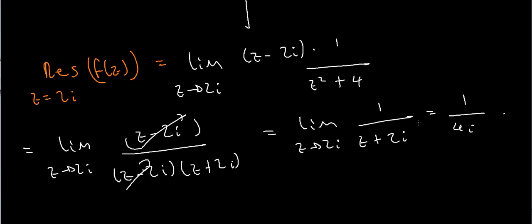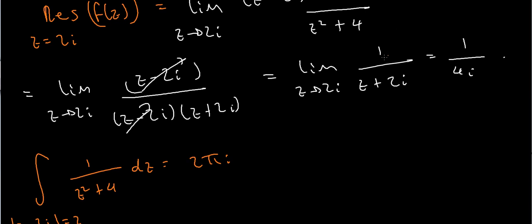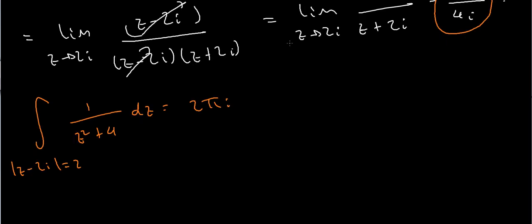Now, if I use the residue theorem, so using the residue theorem, this says that the integral over the circle, mod z minus 2i equals 2, of 1 over z squared plus 4 dz, that's just 2 pi i times the sum of my residues. Well, I've only got one residue, because there is only one pole that lies inside my contour. So, it's 2 pi i times the sum of the residues, which is just 1 over 4i, which is 2 pi i over 4i. The i's cancel, and I'm left with pi over 2.